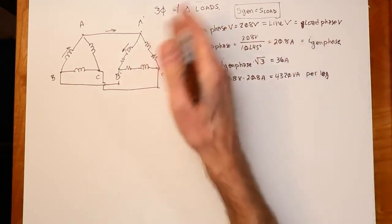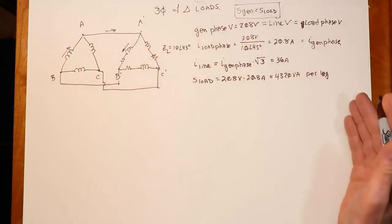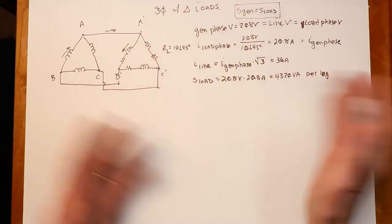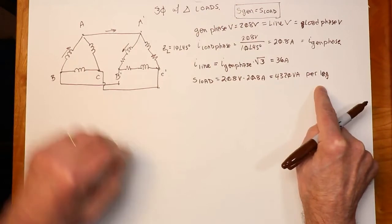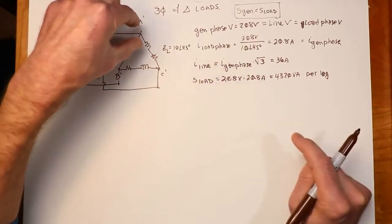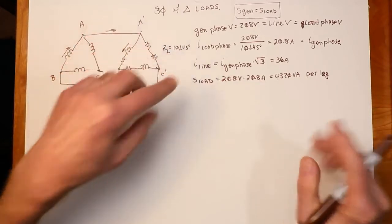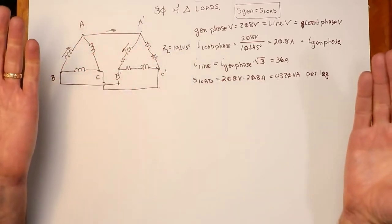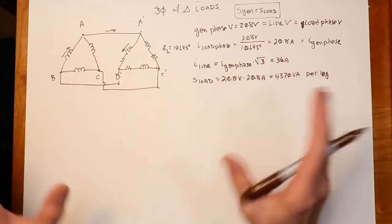Now, if you're thinking, hey, wait a minute, we had an identical load last time. We didn't get anywhere near this. We got like 1440. Why 4320? Because in this case, we got 208 volts across 10 ohms rather than 120 volts across 10 ohms. So there's clearly a difference here, and we're pulling a lot more current.